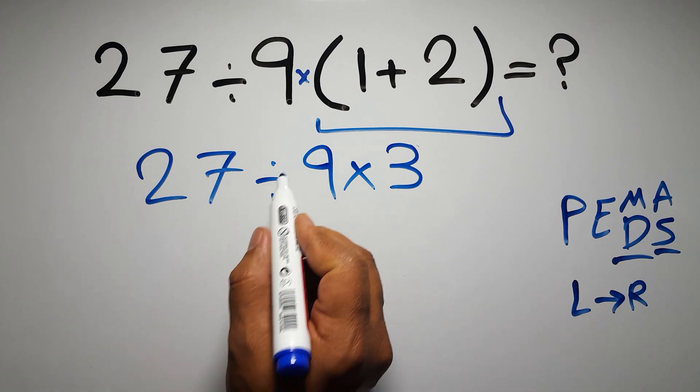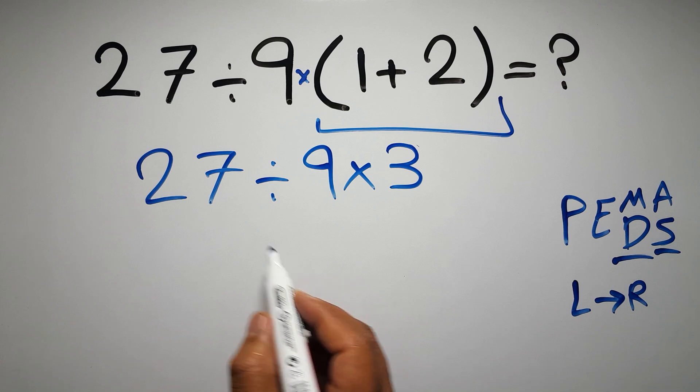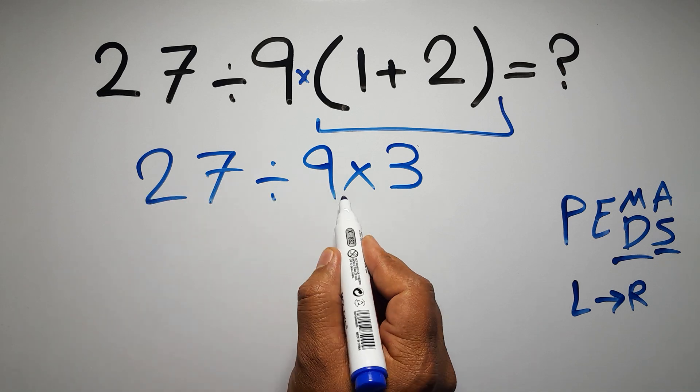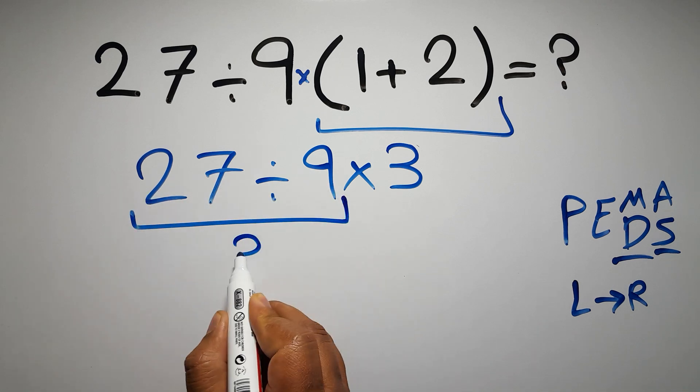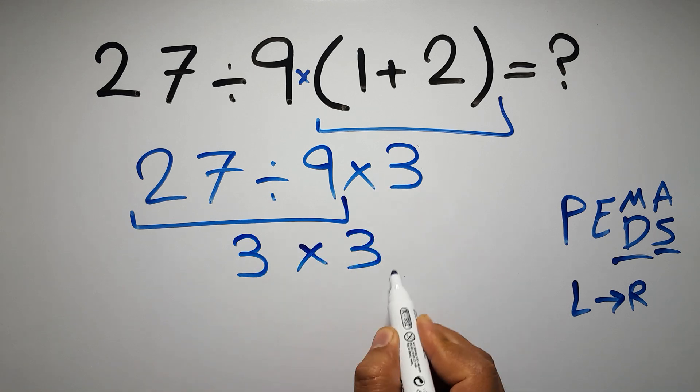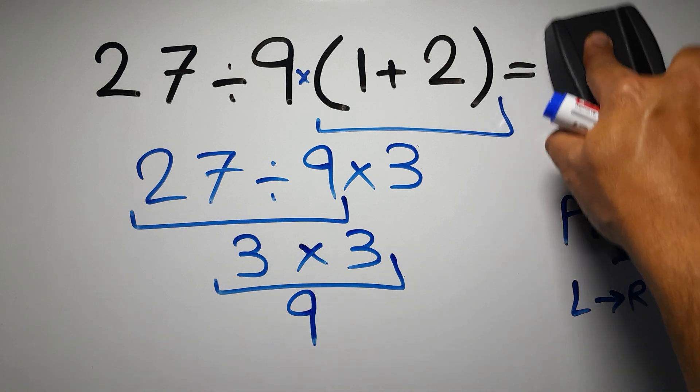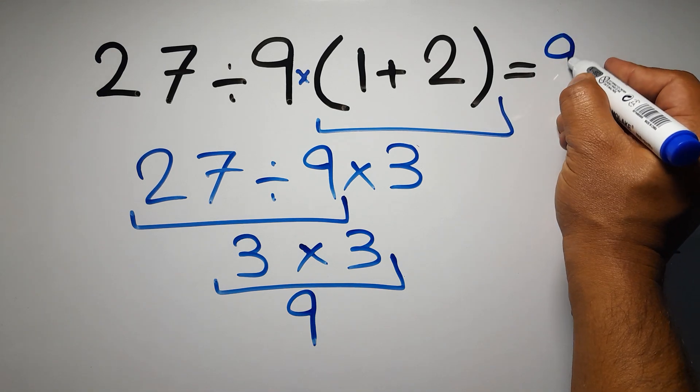First, 27 divided by 9, which equals 3. So we have 3 times 3, which equals 9. This is our final answer to this problem. The correct answer is 9.